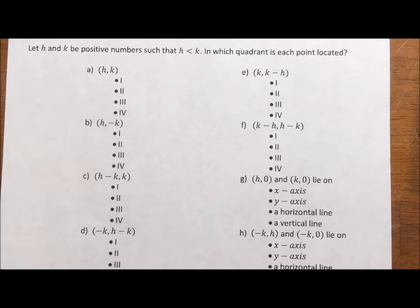So this problem is kind of fun. It says, let h and k be positive numbers such that h is less than k, in which quadrant is each point located.